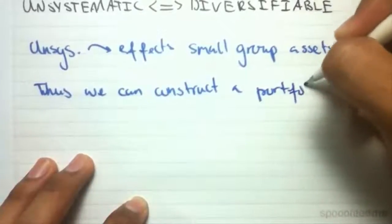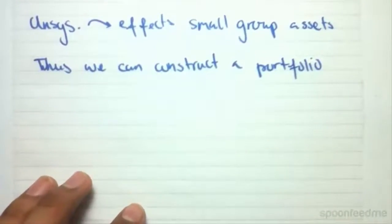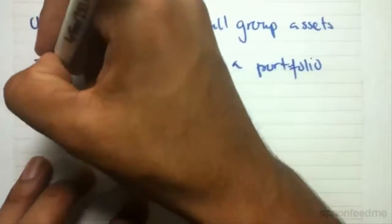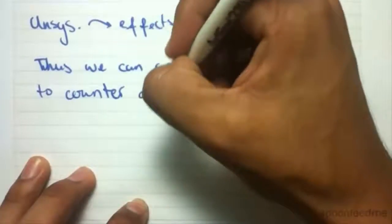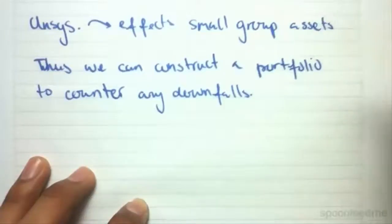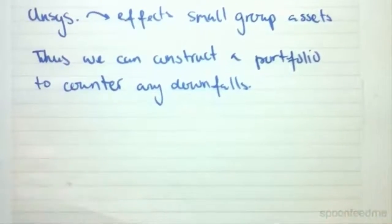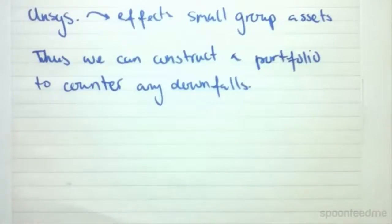To counter any downfalls, because some returns may experience a particular downfall, but if we construct our portfolio in such a way, i.e. diversify our portfolio, we can counter these downfalls.